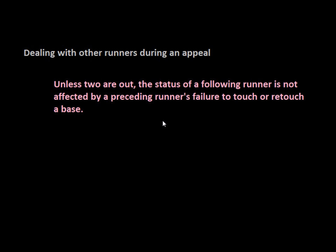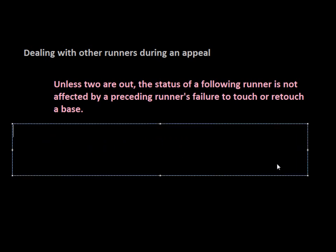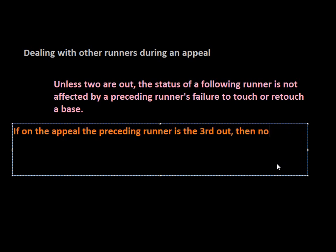The second part says that if the appeal results in a third out, then no runners following him are permitted to score. So if on the appeal the preceding runner is the third out to end the inning, then no runner following him shall score.